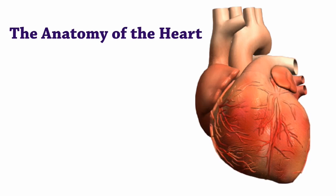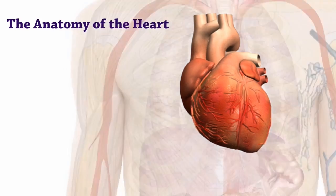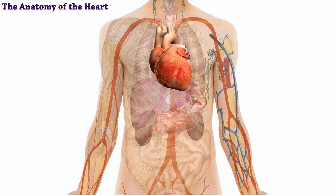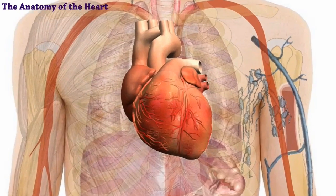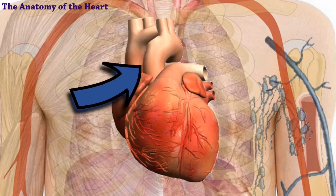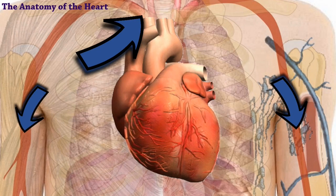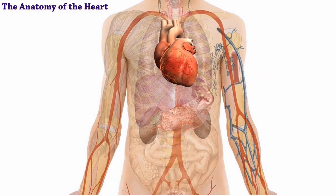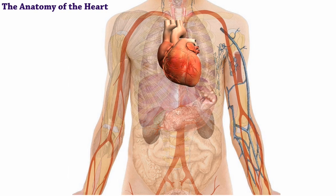Welcome to the Anatomy of the Heart. Your heart is located in the center of your chest. Its muscular walls contract, which creates your heartbeat and pumps blood throughout your body. As your blood moves around, it delivers oxygen and nutrients to every cell.